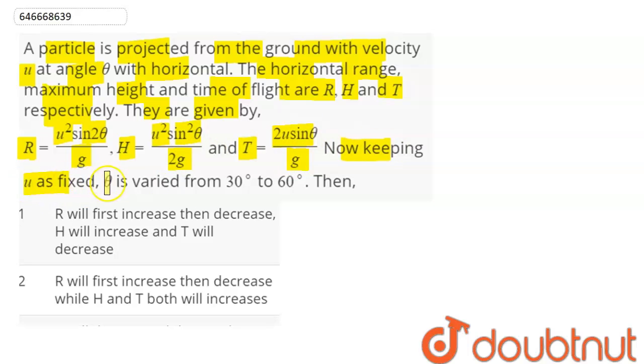Now keeping u as fixed, theta is varied from 30 degrees to 60 degrees. Then R, H and T, how will they increase or decrease?